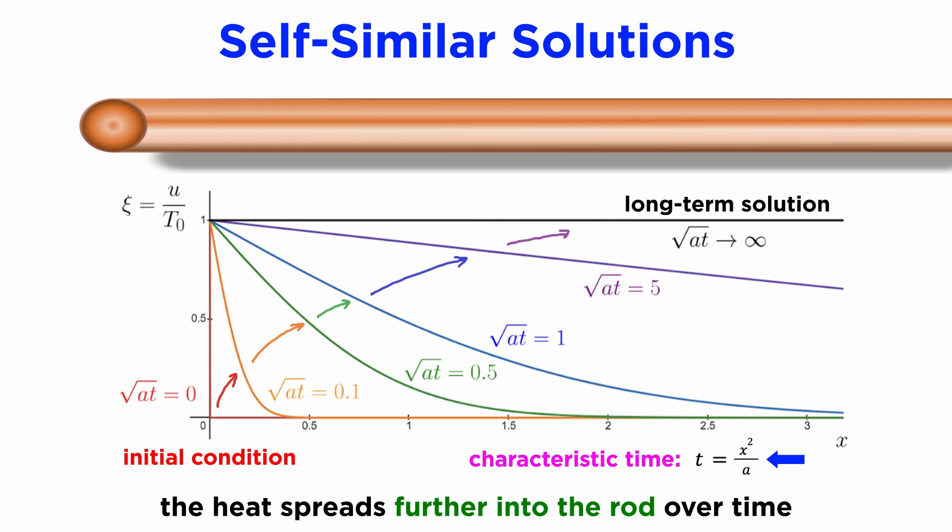If we'd like, we can also invert this relationship to get a characteristic timescale which will be x squared over a, which is roughly the amount of time we have to wait before the majority of the solution u reaches a given position x.